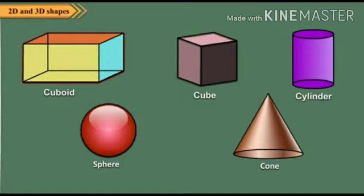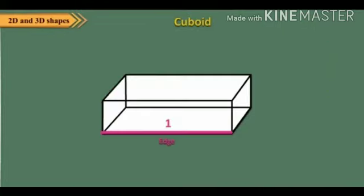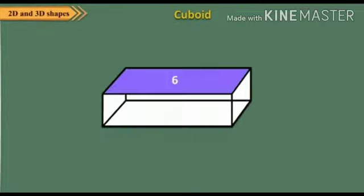Look at the shapes of the solids shown here. All these objects have the shape of a cuboid. A cuboid has twelve edges. The point where three edges meet is called a vertex. A cuboid has eight vertices. A cuboid has six faces. So cuboid ke kitne edge hoote hai? Twelve edges hoote hai.